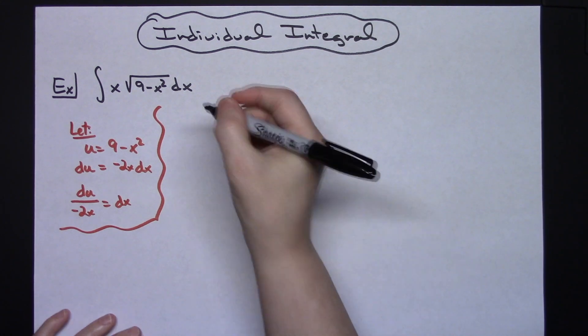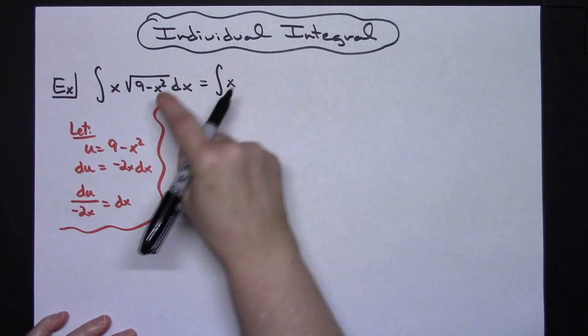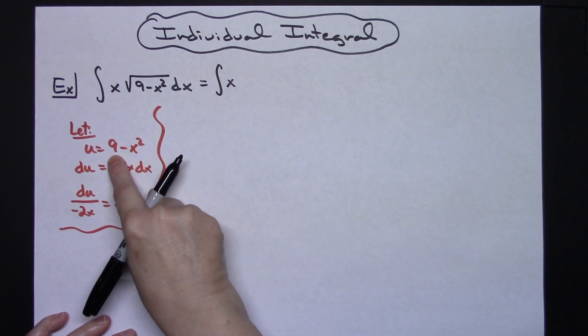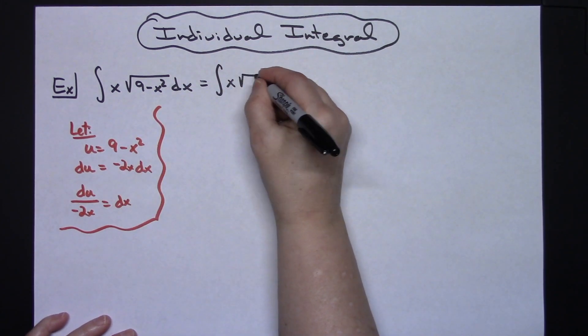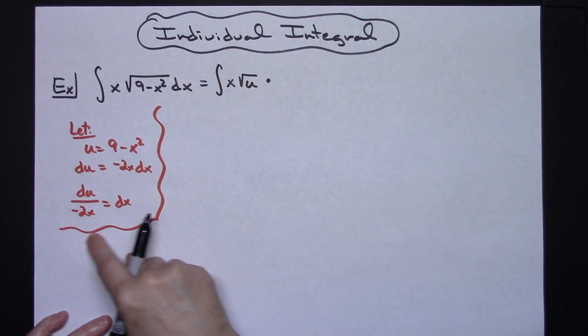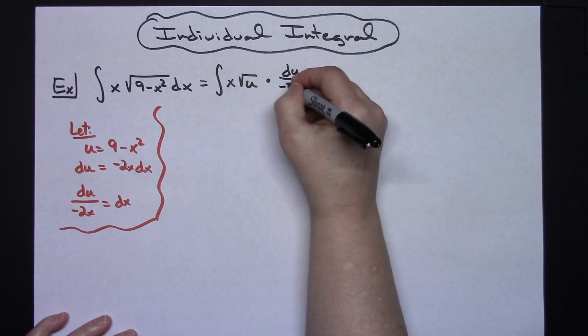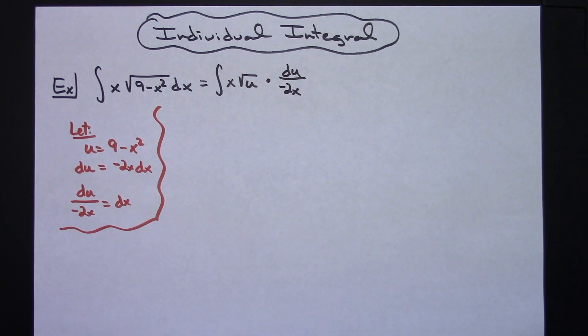Then I'm going to come back up here to my original integral and do some substitutions. The x is going to stay. I'm going to replace that 9 minus x squared with my u, so I'll have square root of u. I'm going to replace that dx with du over negative 2x.